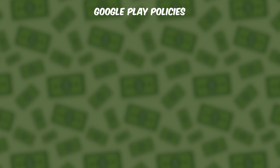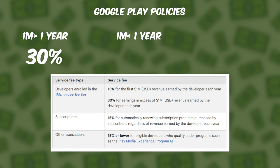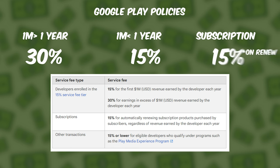Now for some Google Play policies: if your game earns more than 1 million dollars every year, Google Play will take a 30% commission from each transaction. If your game makes less than 1 million dollars, Google Play will take only 15%. For subscription products, Google Play always takes a fixed 15% commission no matter how much your game earns. If you want to bring this percentage down further, you can participate in different programs offered by Google Play — the link is in the description.